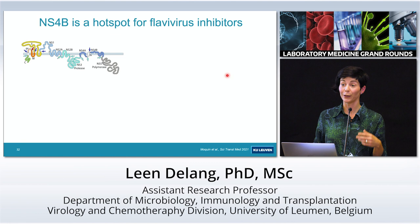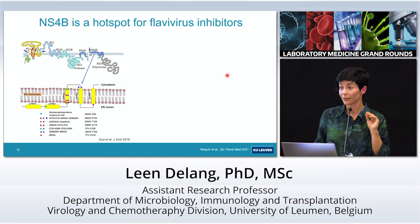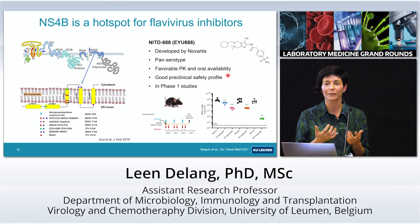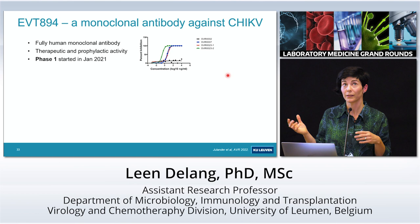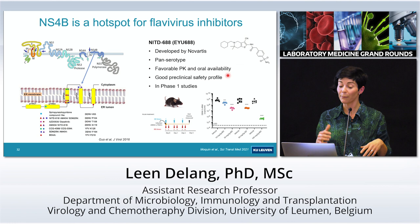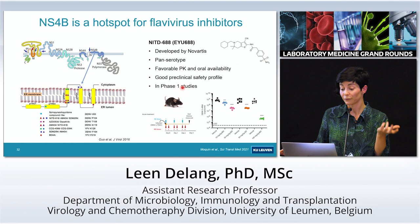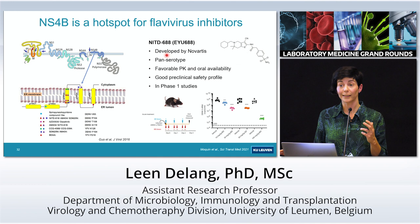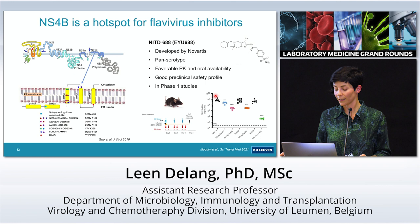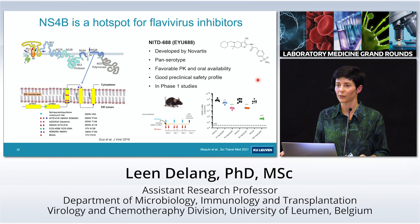The NS4B protein for flaviviruses seems to be a hotspot for inhibitors, with many groups describing NS4B inhibitors for dengue and yellow fever virus. There's also another molecule in clinical development, in phase one studies now, developed by Novartis — the NITD688 — which is also pan-serotype and targets NS4B. Mouse study data showed quite a good reduction of virus replication in the BID treatment group. So there are now two NS4B inhibitors in clinical development.